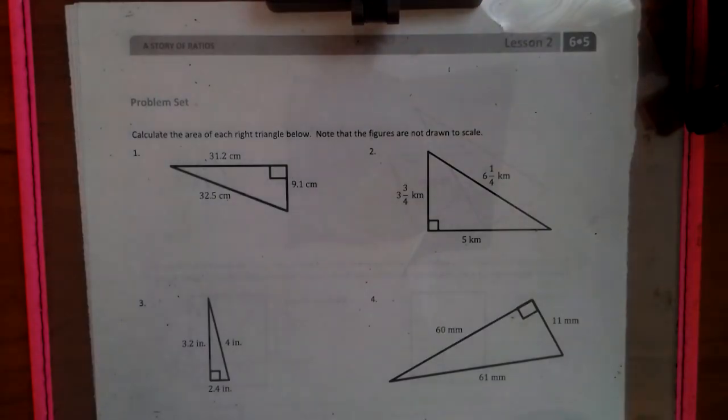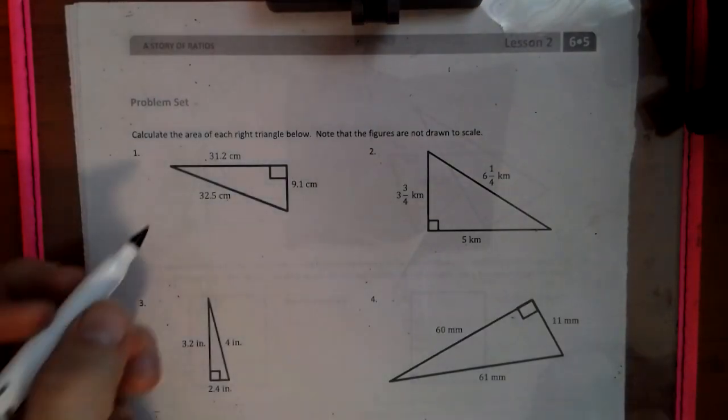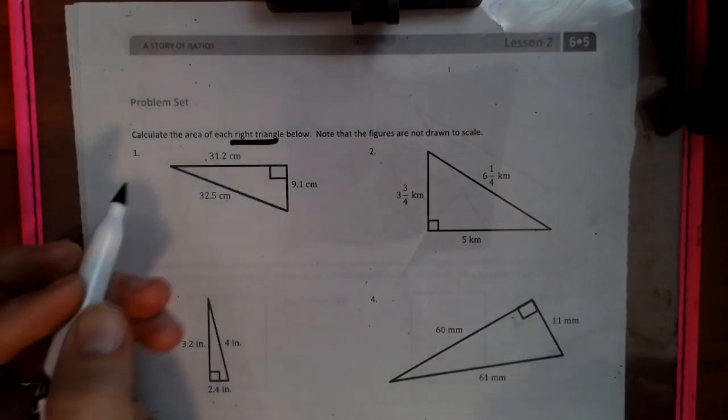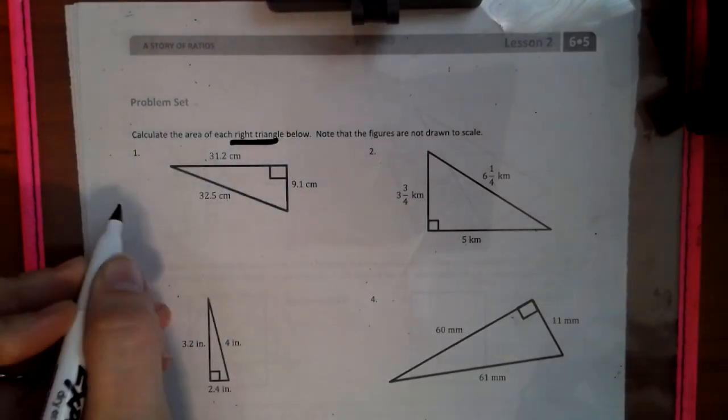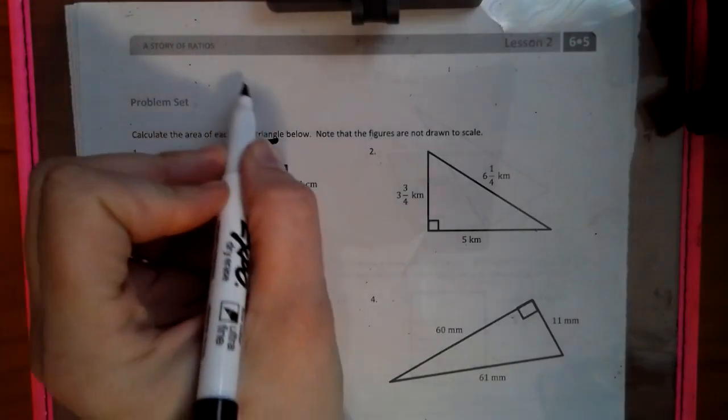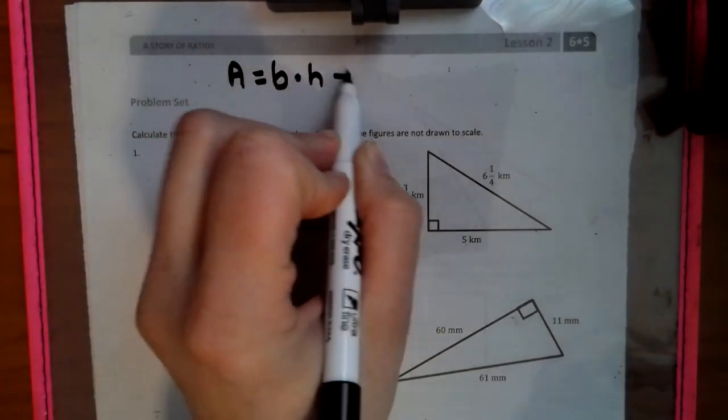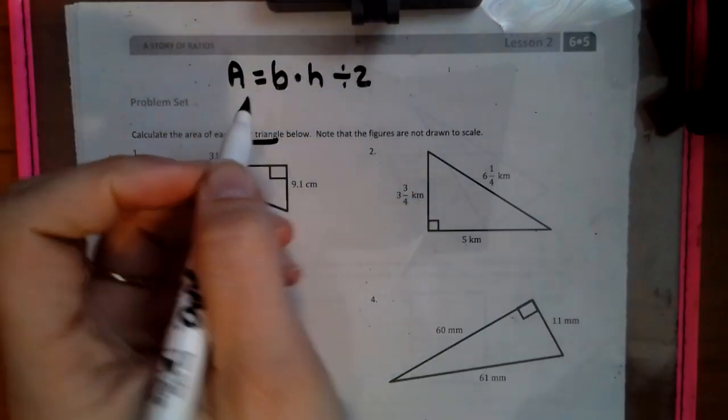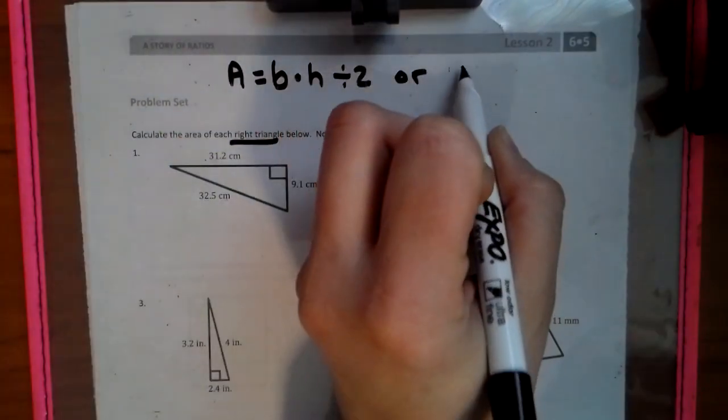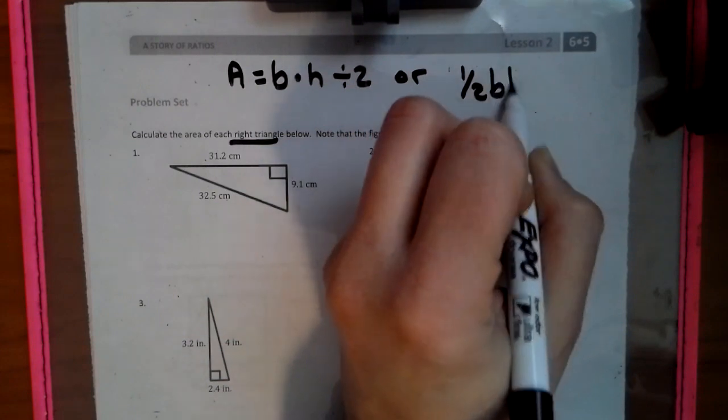Now we have triangles we're dealing with today. The cool thing about the triangle, and we're going to be specifically in right triangle world today, we have two formulas we can use. We can use area equals base times height divided by two, or we can use one half base times height.